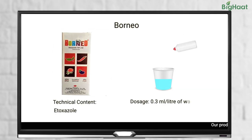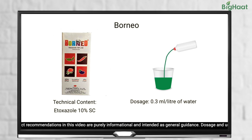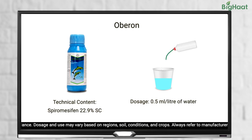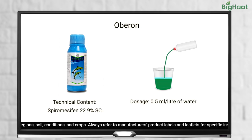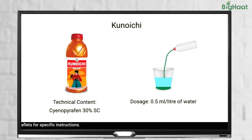To get rid of red spider mites, we suggest using Borneo at a rate of 0.3 ml per litre of water. You can also use 0.5 ml of Oberon in 1 litre of water, or Kunoichi 0.5 ml in 1 litre of water.